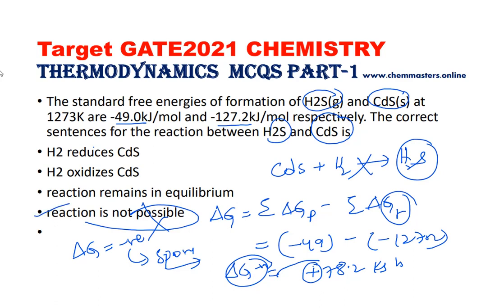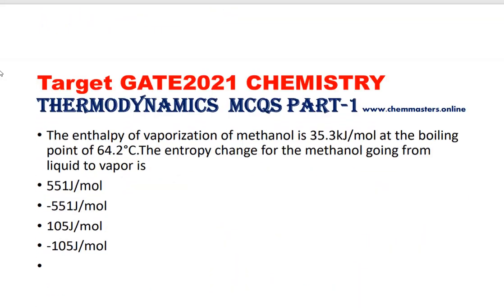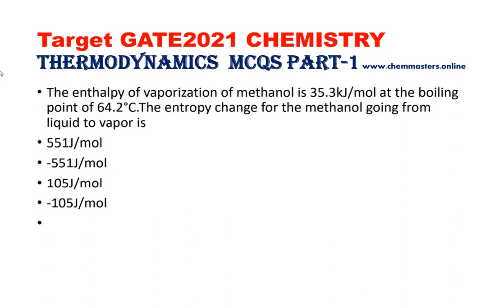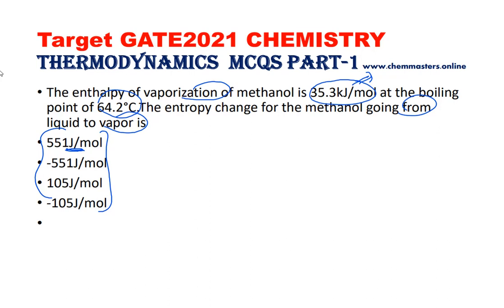Next question: the enthalpy of vaporization of methanol is 35.3 kJ/mol at the boiling point of 64.2°C. The entropy change for methanol going from liquid to vapor is asked. Note the enthalpy is given in kJ/mol but the answer options are in J/mol — pay attention to units. We write the equilibrium reaction between liquid methanol and its vapor. For the equilibrium reaction, ΔG must be zero.